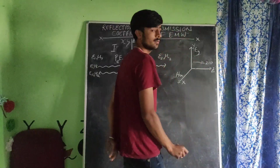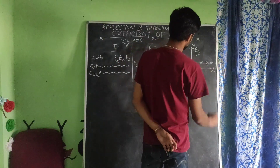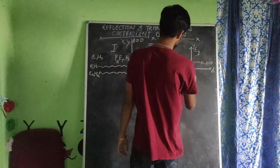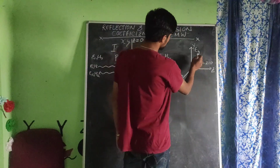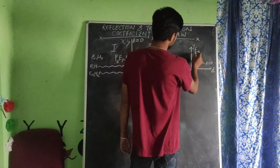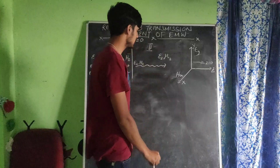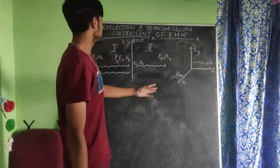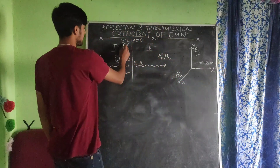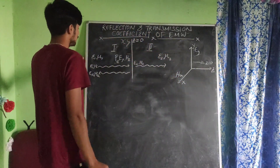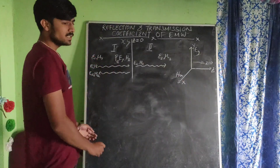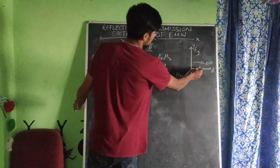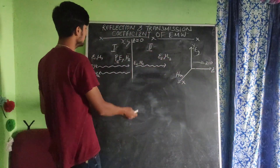Now let us consider three coordinates: x, y, and z. When the electromagnetic wave is traveling towards the z-axis, we get two components — the electric component and the magnetic component. The electric component is towards the y-axis, denoted as E_y, and the magnetic component is towards the x-axis, denoted as H_x. At boundary condition z equals zero, we get an x-y plane.